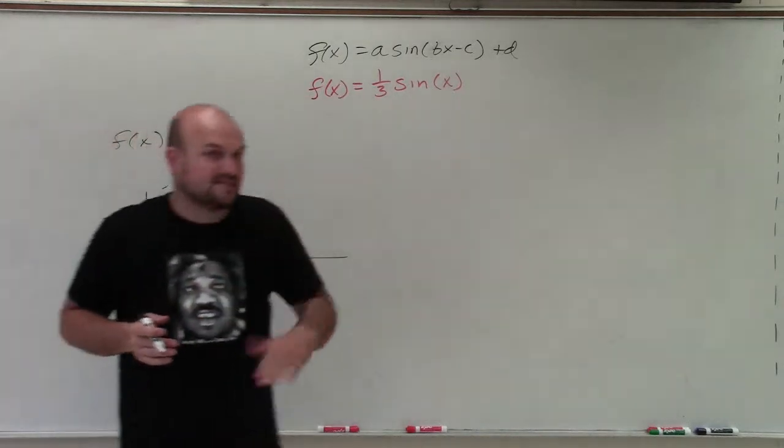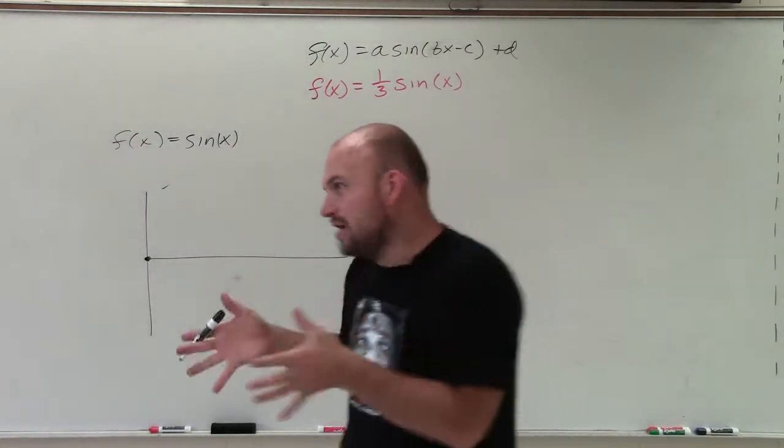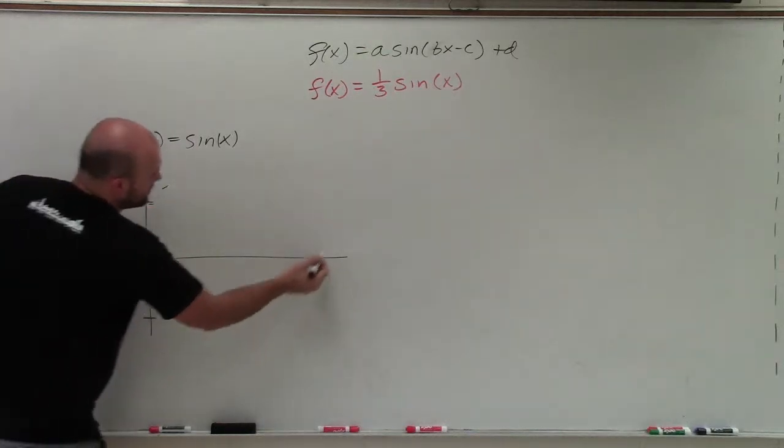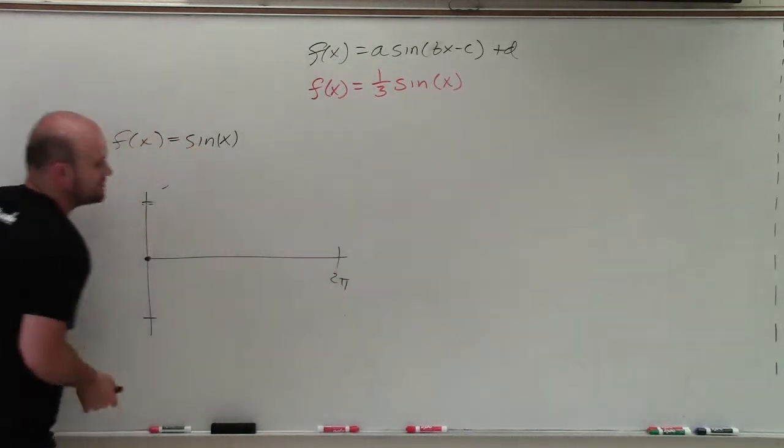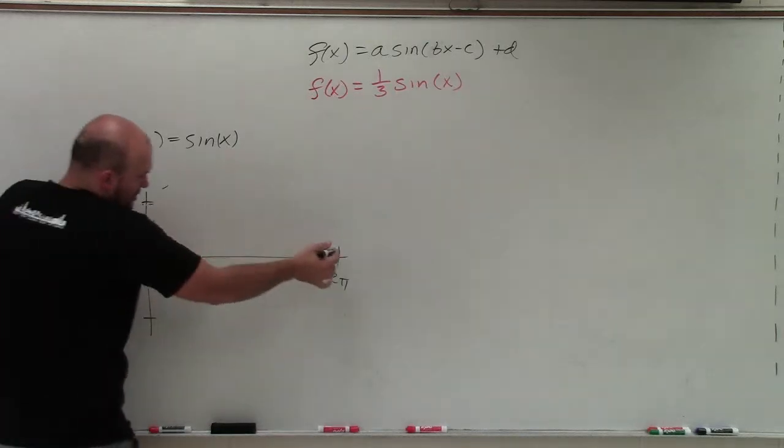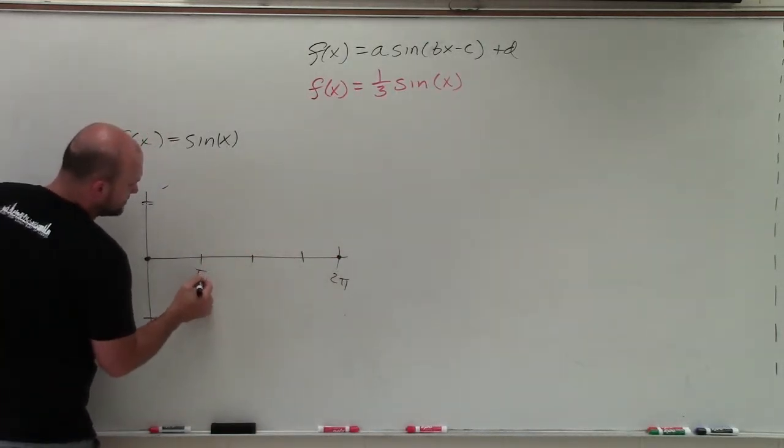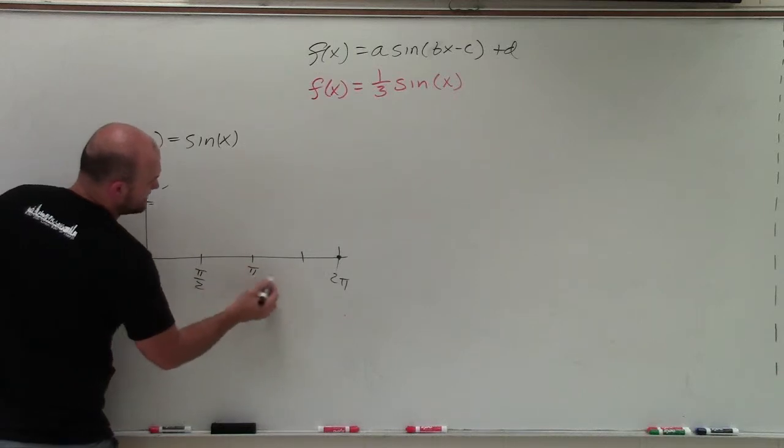And again, remember this graph repeats itself. It goes on and on forever. But one part of it starts at 0, goes up to 1, down to negative 1. It repeats itself at 2π, which we call the period. From the start to the end, it's 2π. And the distance between each important interval is π/2, which we call the x scale.